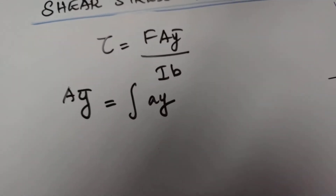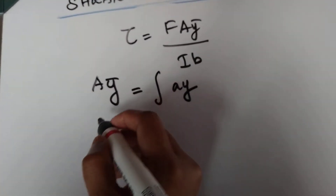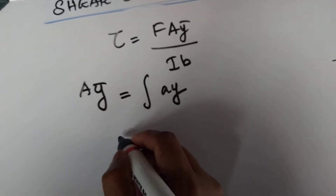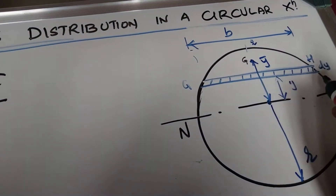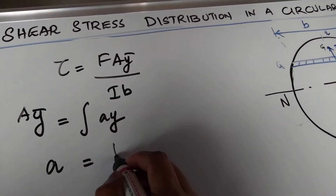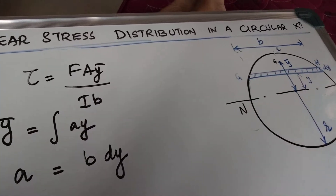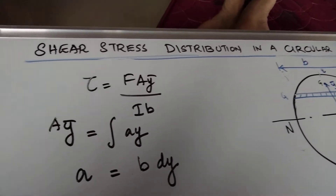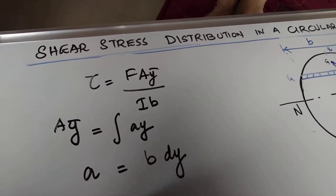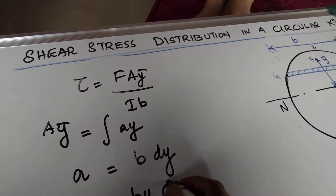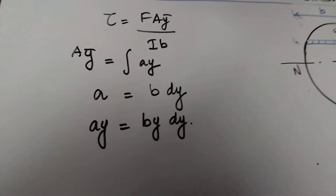We are going to consider an element of thickness dy at a distance of y from the neutral axis. The area of the element will be A = b·dy — the element width is b and the thickness is dy. So A = b·dy, and multiplying by y we get A·y = b·y·dy. Thus the integral of A·y dy is equal to